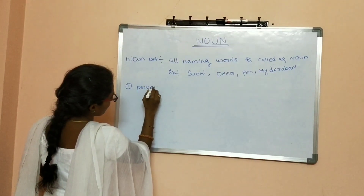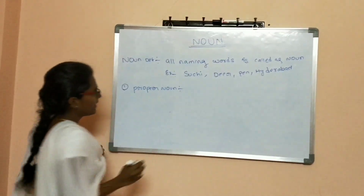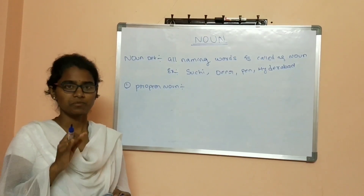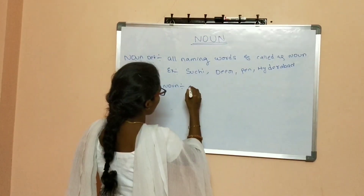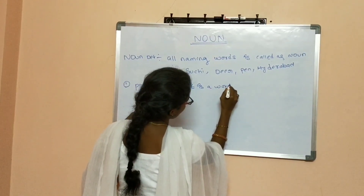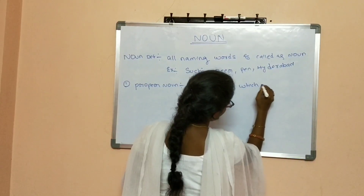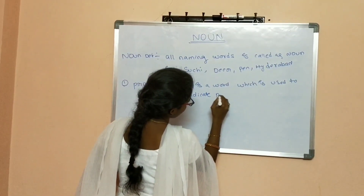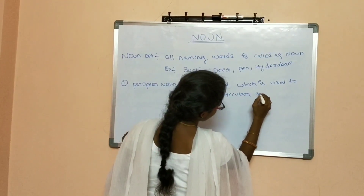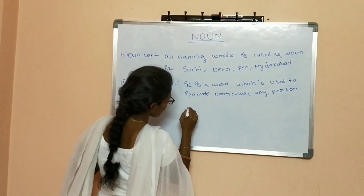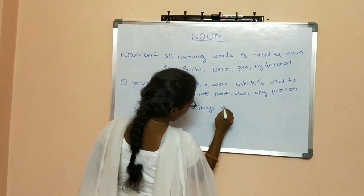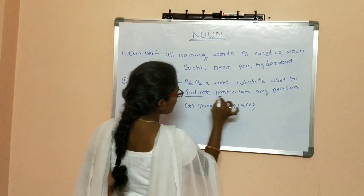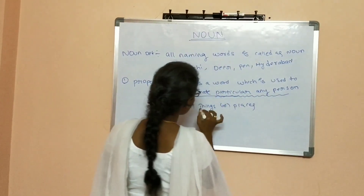Proper Noun: it is a noun we use to call a special name of a person, thing, or place. We can use it to indicate a specific person, thing, or place. It is a word which is used to indicate a particular person, thing, or place. Remember: it indicates a particular — this is very important — any particular person, thing, or place.